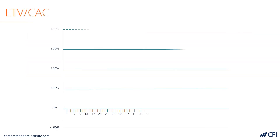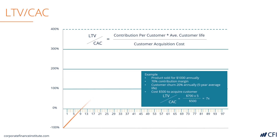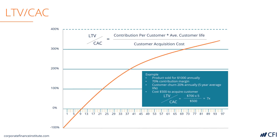Finally, lifetime value divided by customer acquisition cost. As you'll see on this graph, you definitely want this multiple to be more than one, and ideally five times or more is a great number. To walk through an example: take the contribution margin per customer and multiply it by the average customer life. If you sell a product for $1,000, the contribution margin is 70%, the churn rate is 20% meaning the customer life is about five years, and it costs $500 to acquire the customer — you get an LTV to CAC ratio of 7x, which would be a very high ratio.